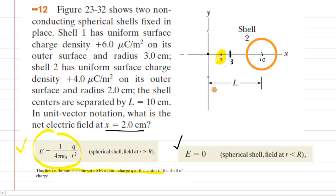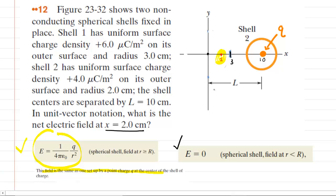We can imagine that all the charge of the spherical shell is concentrated into a single point charge Q located at its center. That allows us to calculate the electric field. We need to figure out the total charge concentrated at that point and the distance from it to the location of interest. From the labeled distances, that distance is 8 centimeters — we simply subtract 2 from 10. So R equals 8 centimeters.